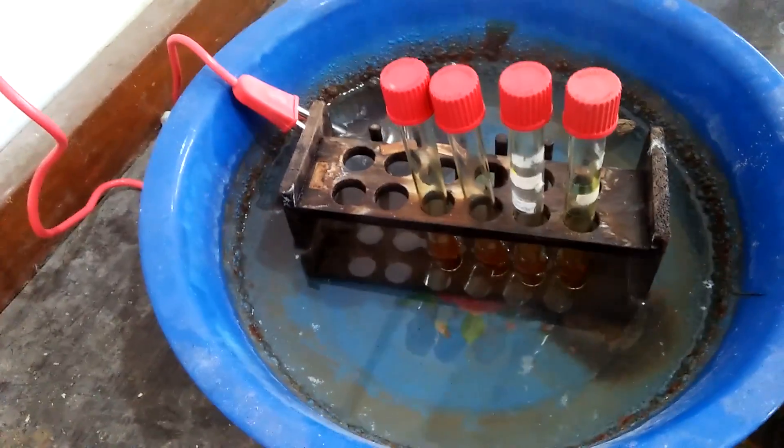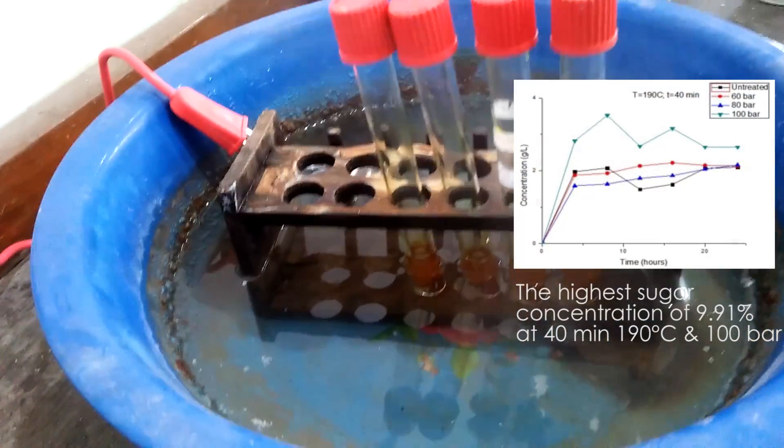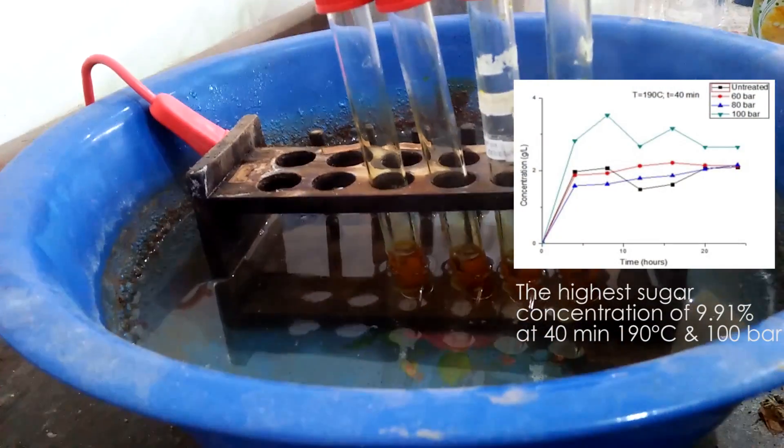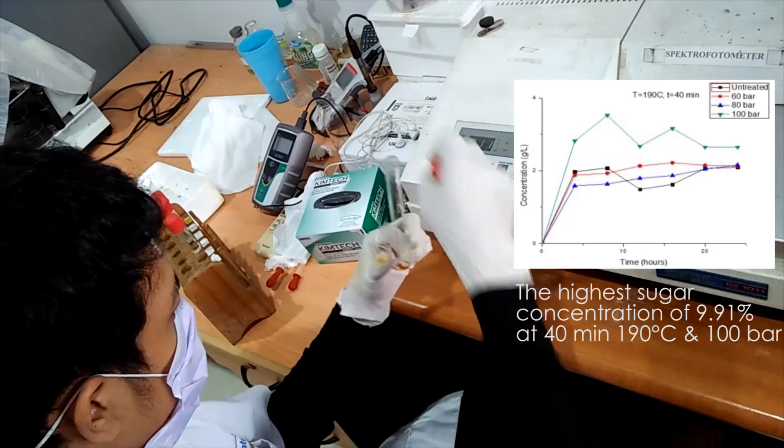In enzymatic hydrolysis, the highest sugar concentration of 9.91% at 40 minutes, 190 degrees Celsius, and 100 bar.